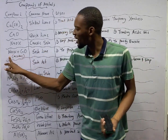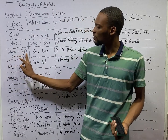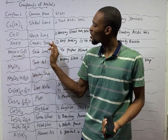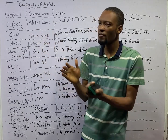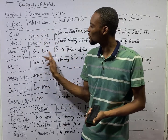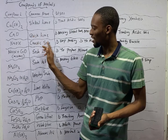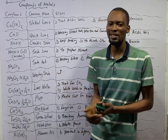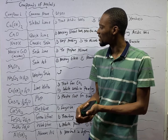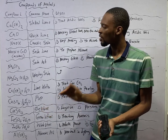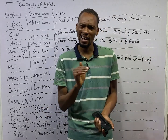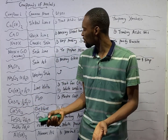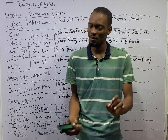When caustic soda is mixed with calcium oxide — that is sodium hydroxide plus calcium oxide, caustic soda plus quicklime — once they are mixed, you get soda lime. Soda lime is a mixture of sodium hydroxide and calcium oxide. Soda lime is used to prepare alkanes, which you will see under organic chemistry in the preparation of alkanes.